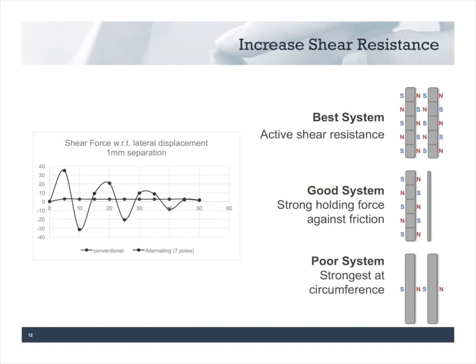On the bottom right you see a conventional magnet-to-magnet system. Looking at the graph, it does have a shear force component — relatively small and long. As the magnets are displaced, you get a fairly constant force trying to pull them back to equilibrium. In the top right, you see a magnet-to-magnet polymagnet system with alternating poles facing each other. This creates a very nice shear resistance due to the attraction and repulsion between those alternating poles. The green curve shows that as you get some lateral displacement between the magnets, you get a fairly high shear force back toward the equilibrium point — much better shear resistance than the other two systems.